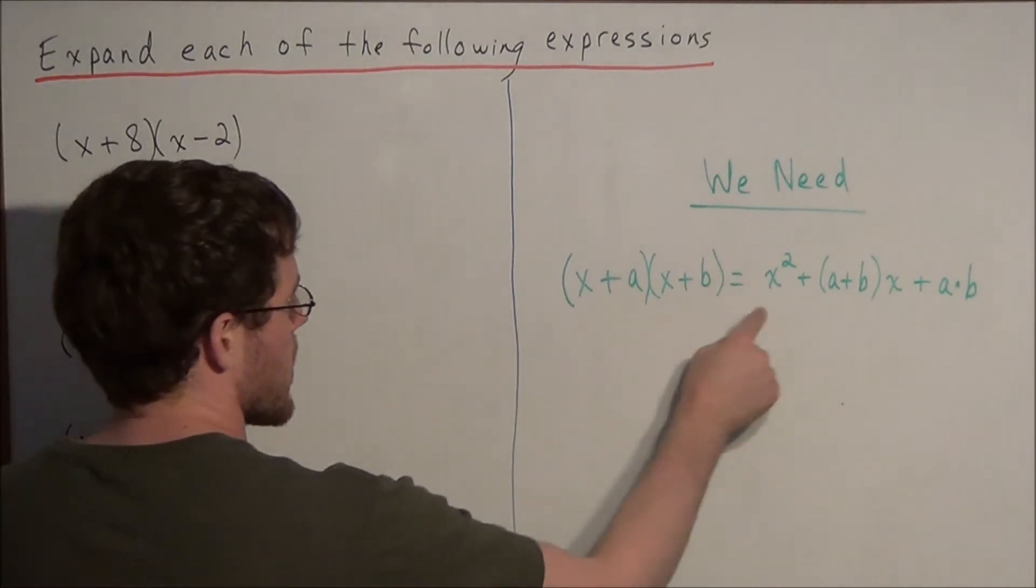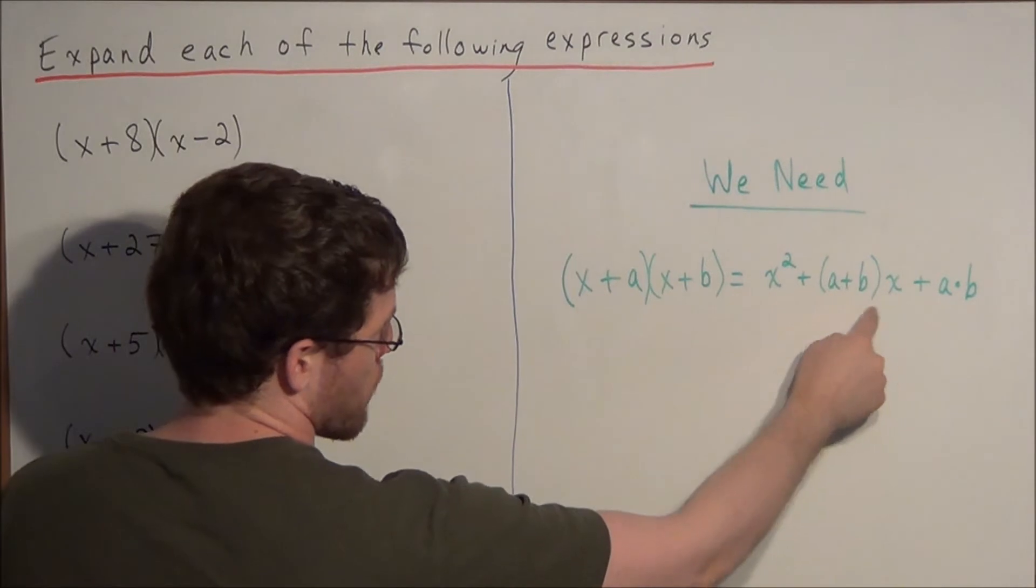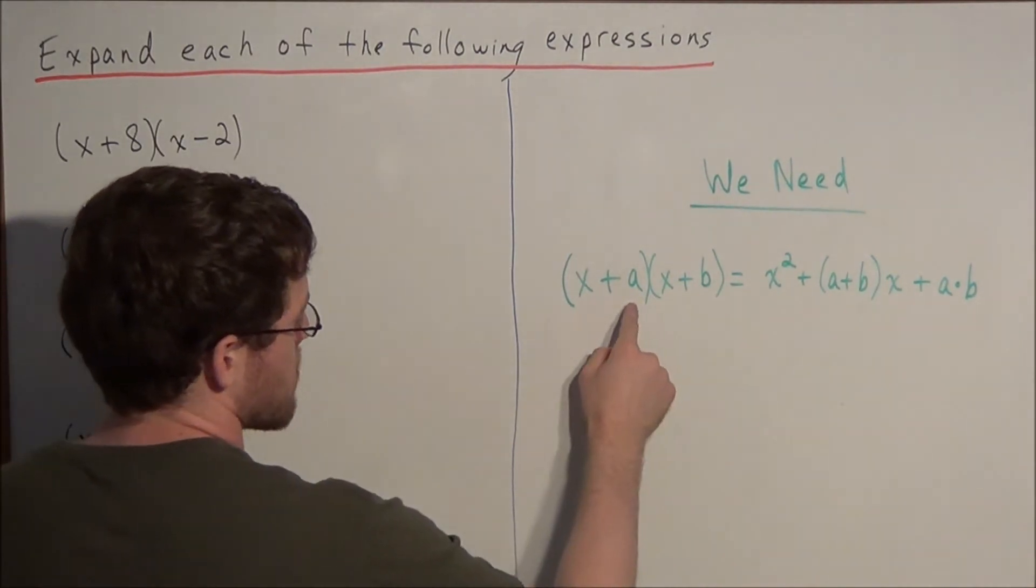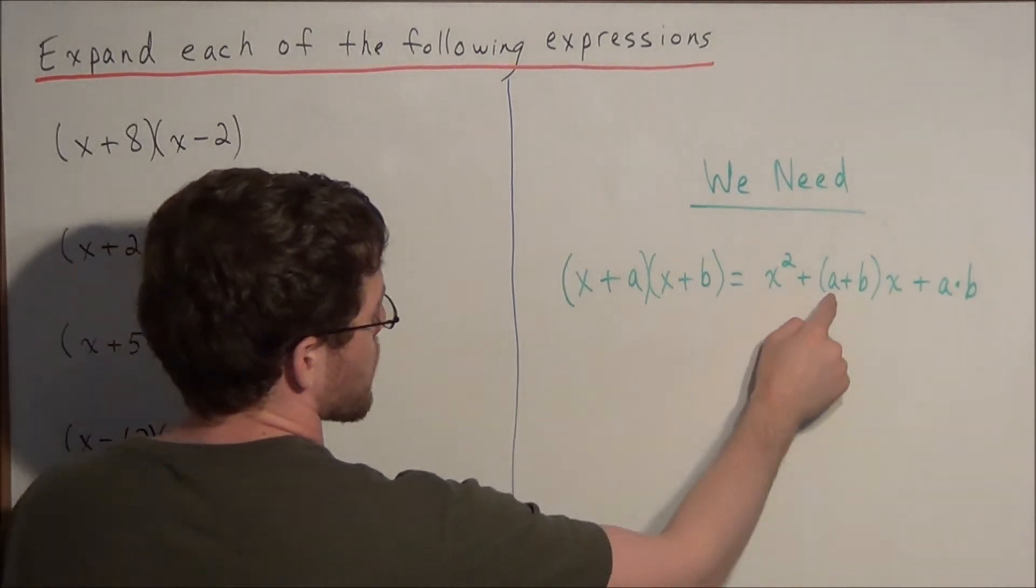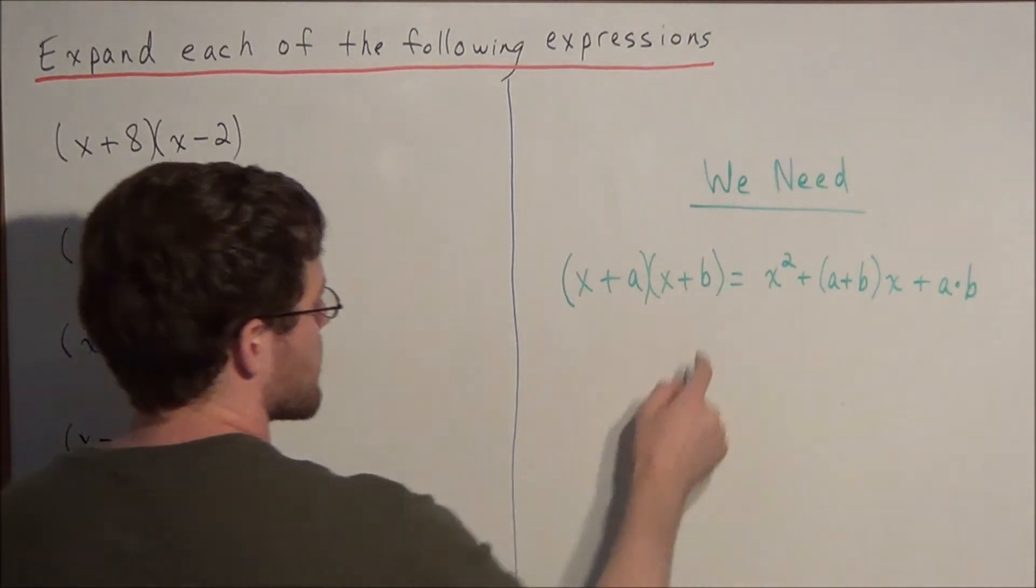Where basically we have x squared plus, and now the term before our x is simply the sum of the a and the b term. So you have a plus bx plus a times b.